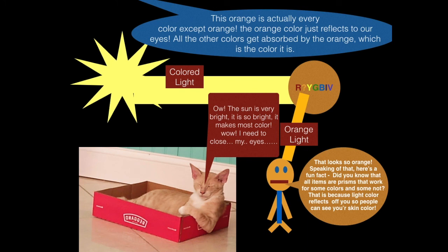It's true that all items are prisms that work for some colors and some not. That's because light color reflects off you, so people can see your skin color.